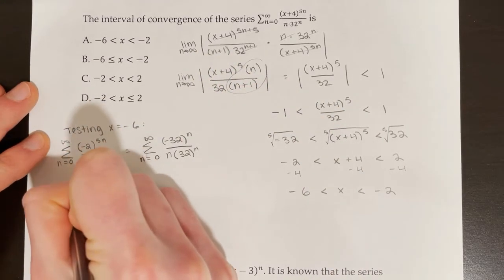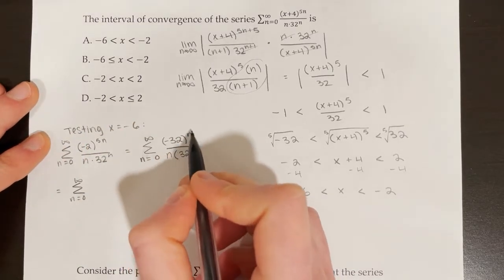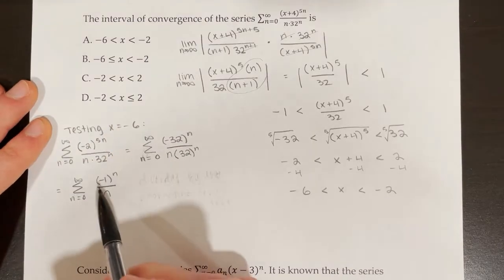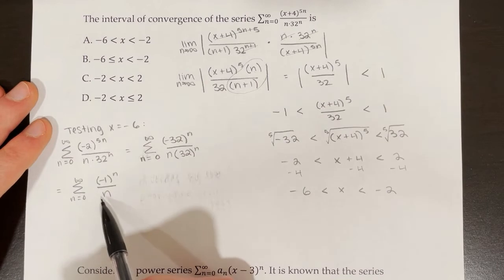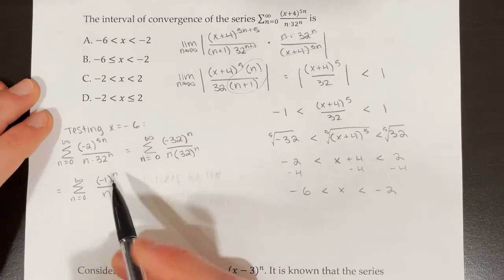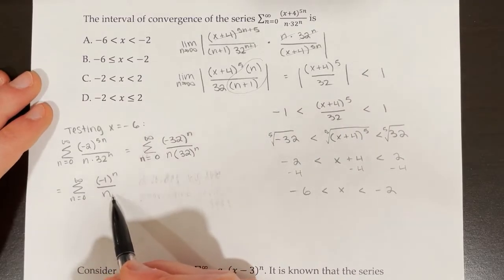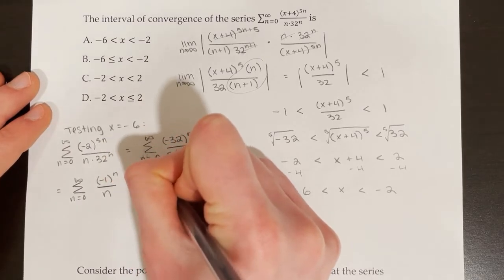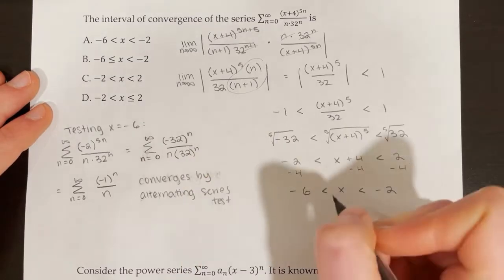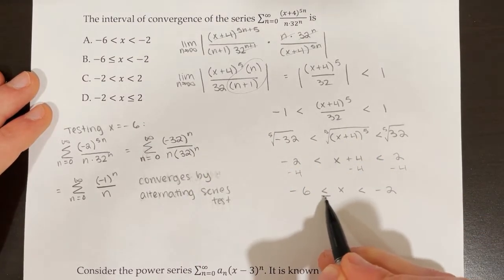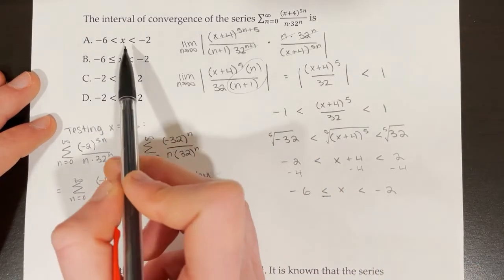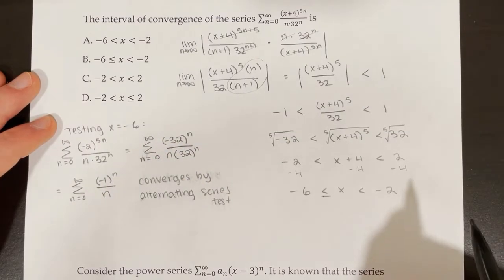This simplifies to the series of negative 1 to the power of n over n. If we just had 1 over n, that would be the harmonic series, which diverges. But because we have negative 1 to the power of n on top, the alternating series test applies: the non-alternating portion 1/n approaches 0 and is always decreasing, so the series converges. Since the series converges at x equals negative 6, we include that endpoint with an equal sign. Therefore, choice B is correct.